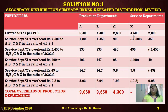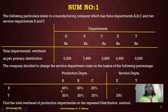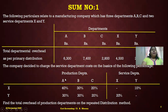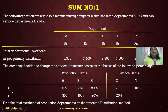Next, take service department X — Rs. 4,500 — and redistribute it to A, B, C, and Y. The percentages for X are 40, 30, 20, 10, giving a ratio of 4:3:2:1. Whenever redistributing X's overheads, always use ratio 4:3:2:1. Whenever redistributing Y's overheads, always use ratio 3:3:2:2. Continue this until the service department columns reach zero.